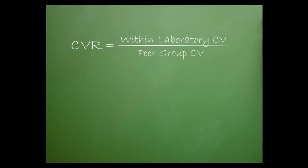Let's look at an example. If the CV for potassium on a particular instrument is 4%, and the potassium for all other laboratories using this same instrument is 4.2%, the CVR is 4 divided by 4.2 or 0.95.